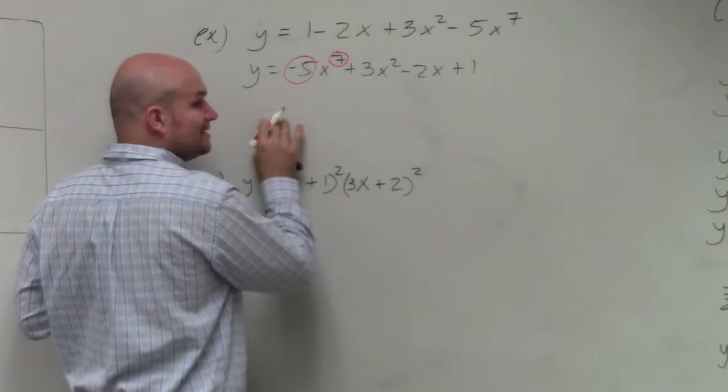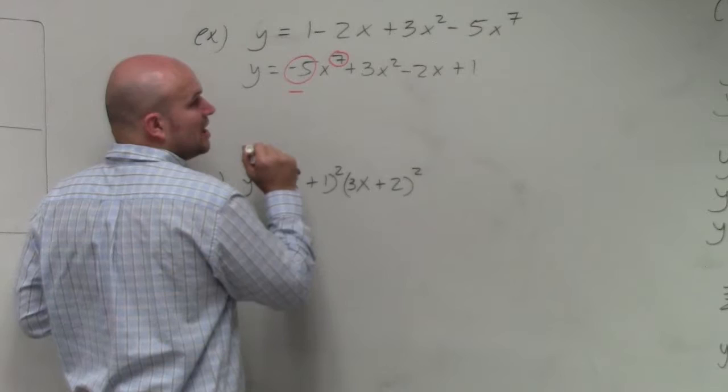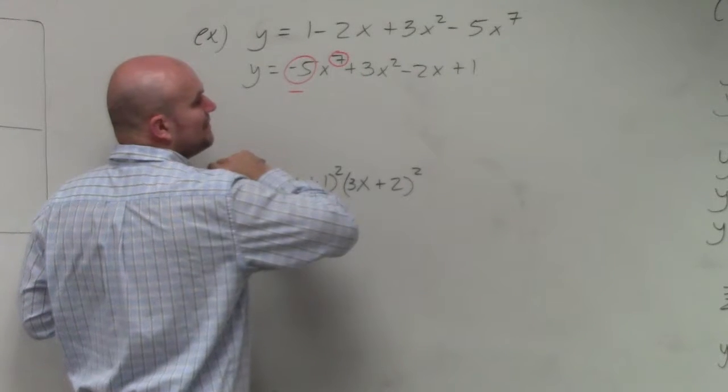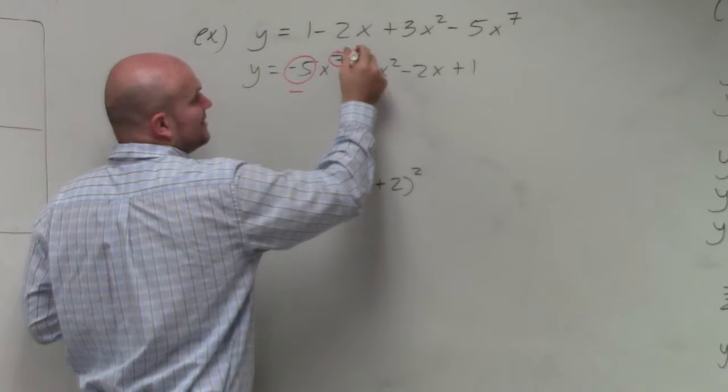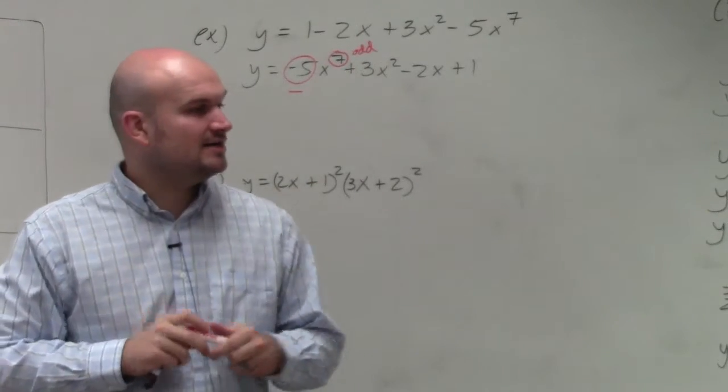Remember, all we're concerned about with the leading coefficient is whether it's negative or positive. This is negative. The only thing we're concerned about with our degree is whether it's even or odd. And that is odd. So therefore, now we're going to write the end behavior.